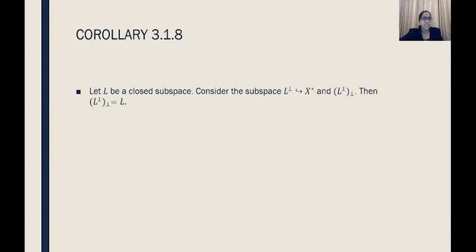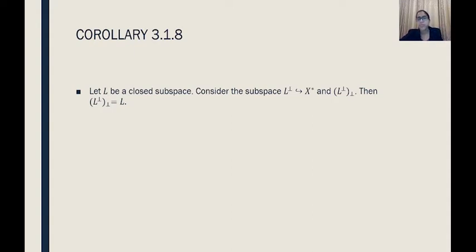What does Corollary 3.1.8 state? Let L be a closed subspace, and consider the subspace L-orthogonal of X star. Clearly L-orthogonal will be a subspace of X star, because X star is the collection of all linear functionals and L-orthogonal is the collection of all those linear functionals which maps L to zero. We will also define L-perp-perp in the proof.